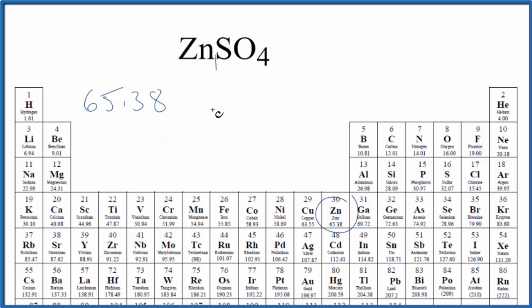We have one zinc atom. We add to that the sulfur. Sulfur is 32.07 grams per mole.